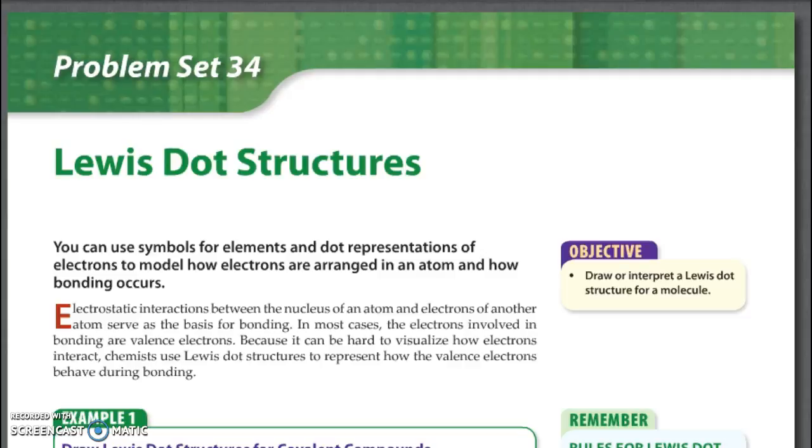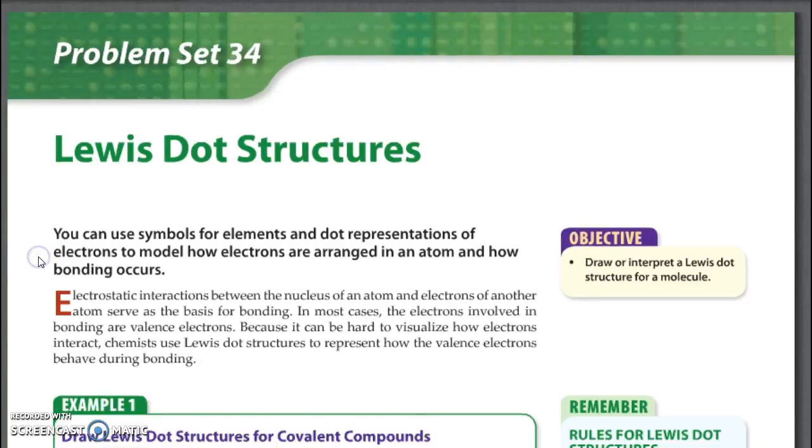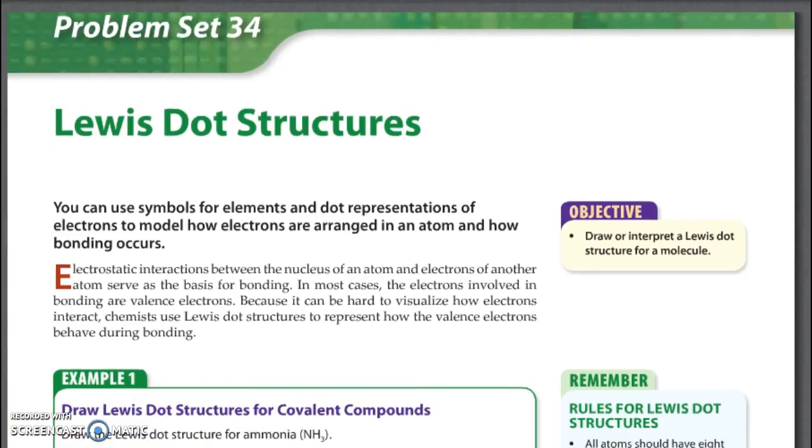Hi chemistry, this is KJ here going over the second part of lesson 4.15, reviewing the atom. And we're at the Lewis dot structure. So go ahead and draw the Lewis dot structure for ammonia, which is NH3. Hit the pause button.